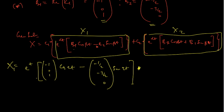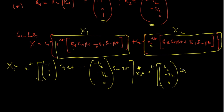For x2, we have e^t since alpha is 1, into b2·cos(βt) plus b1·sin(βt). So x2 equals e^t times [(-1/2, -3/2, 0)·cos(2t) plus (-1, 0, 1)·sin(2t)].